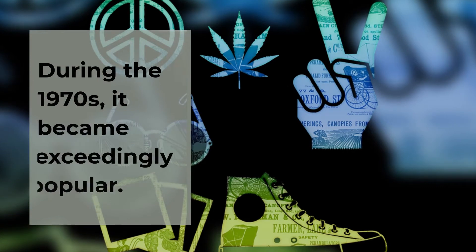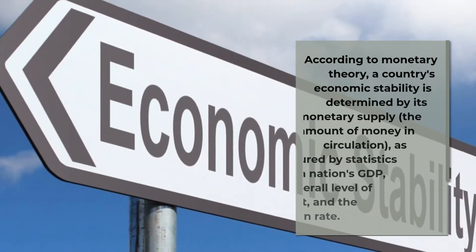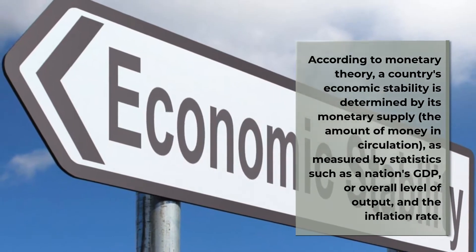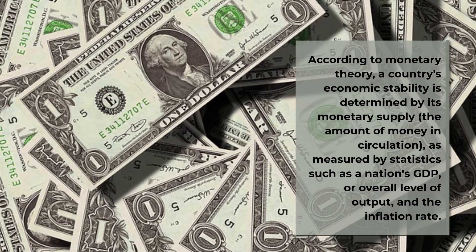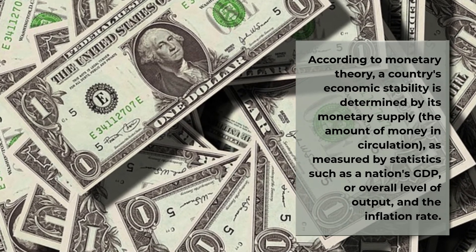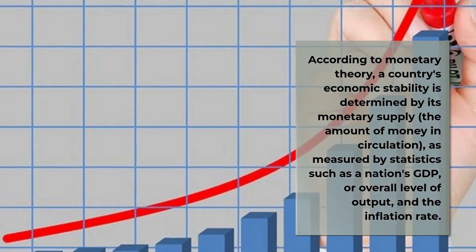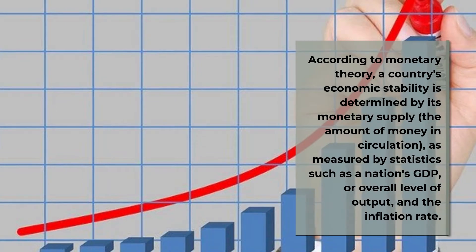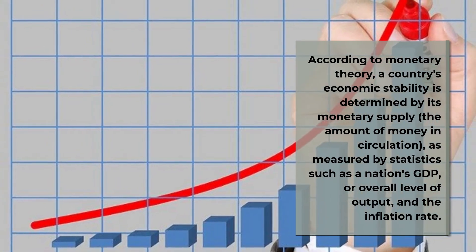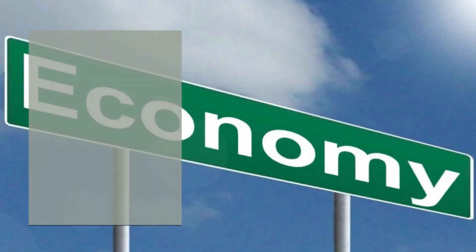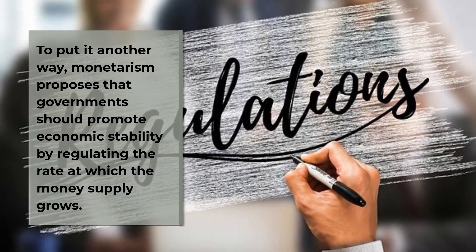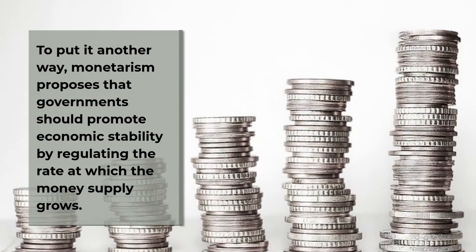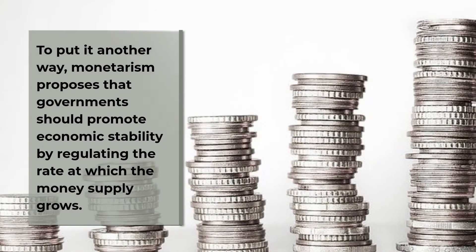During the 1970s, it became exceedingly popular. According to monetary theory, a country's economic stability is determined by its monetary supply — the amount of money in circulation — as measured by statistics such as a nation's GDP, or overall level of output, and the inflation rate. Monetarism proposes that governments should promote economic stability by regulating the rate at which the money supply grows.